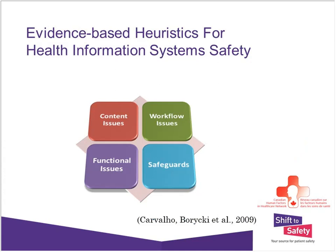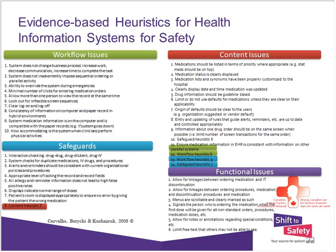Evidence-based safety heuristics are one example. Christopher Carvello reviewed the literature on technology-induced errors, identified the types of errors that occur, and created a set of heuristics that could be used prior to implementing a system or even during the procurement process to identify potential software that could lead to an error. These heuristics provide detail on the different types of reviews that would be used to assess the software.